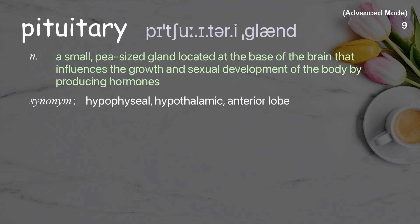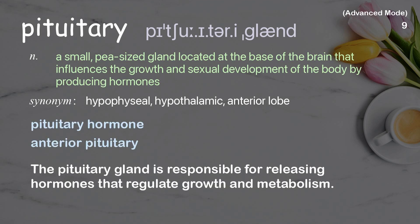Pituitary. A small, pea-sized gland located at the base of the brain that influences the growth and sexual development of the body by producing hormones. Examples: Pituitary hormone. Anterior pituitary. The pituitary gland is responsible for releasing hormones that regulate growth and metabolism.